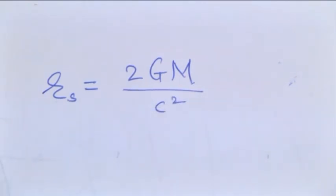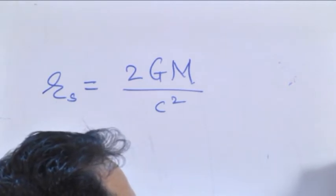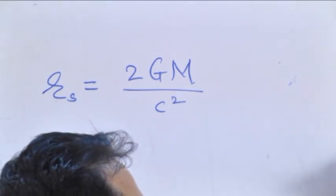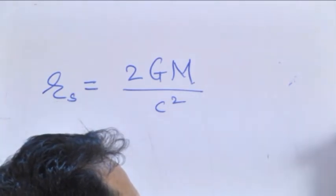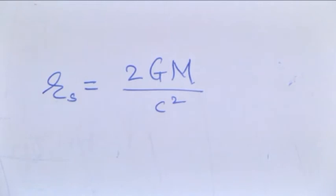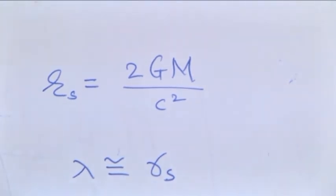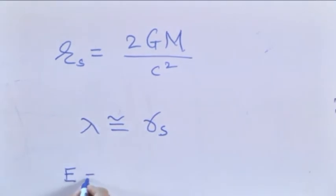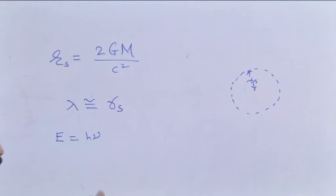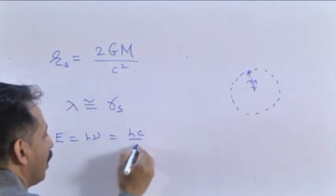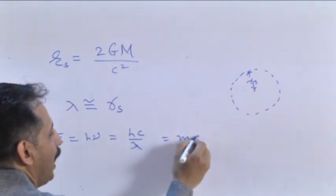So let us consider that the black hole absorbs a photon. For the black hole to absorb a photon, we imagine that this is the Schwarzschild radius of the black hole and the wavelength of the photon is of the order of the Schwarzschild radius so that it is absorbed. So lambda is of the order of the Schwarzschild radius. Now, energy of the photon, we write E equals hν, which can be determined as hc upon the wavelength and this amounts to mc squared.